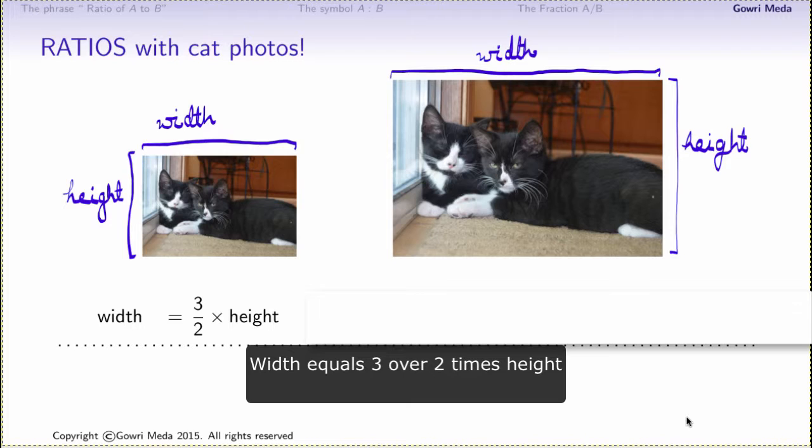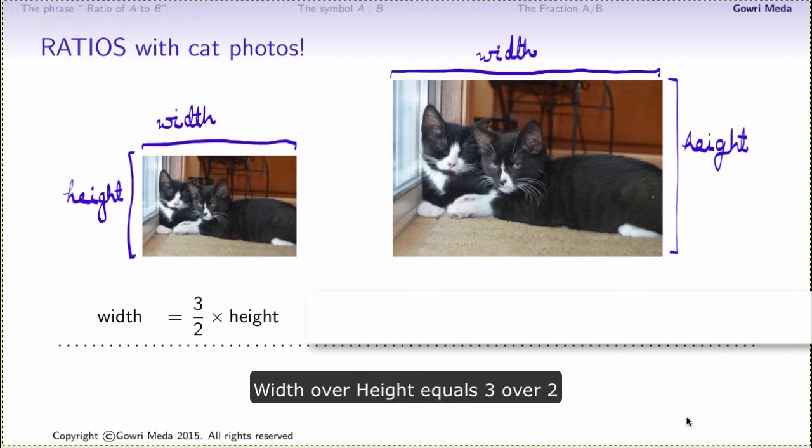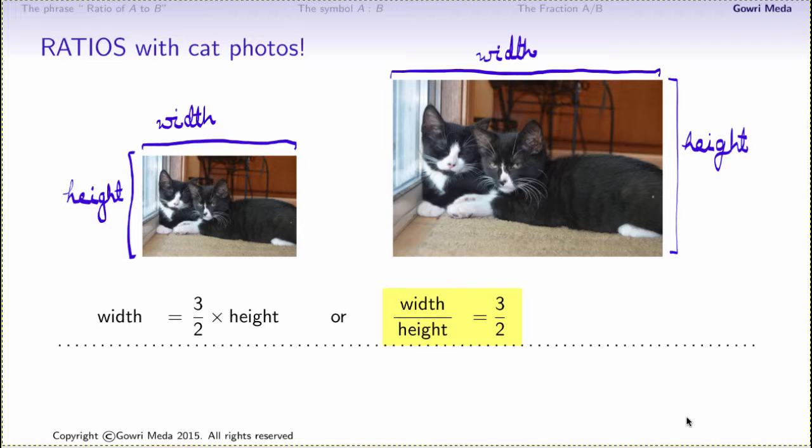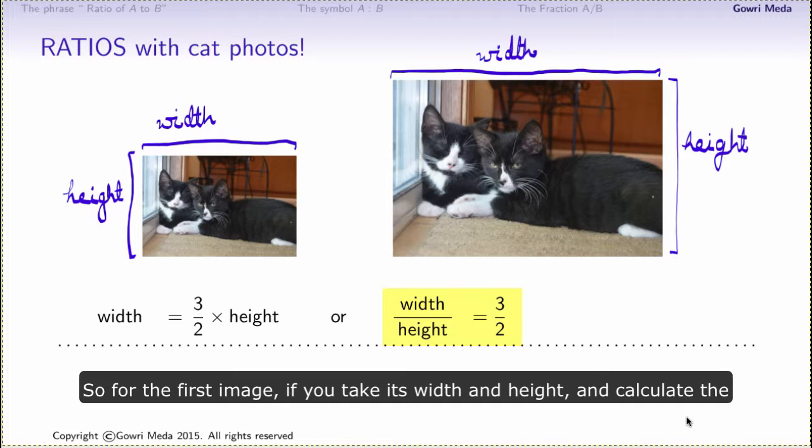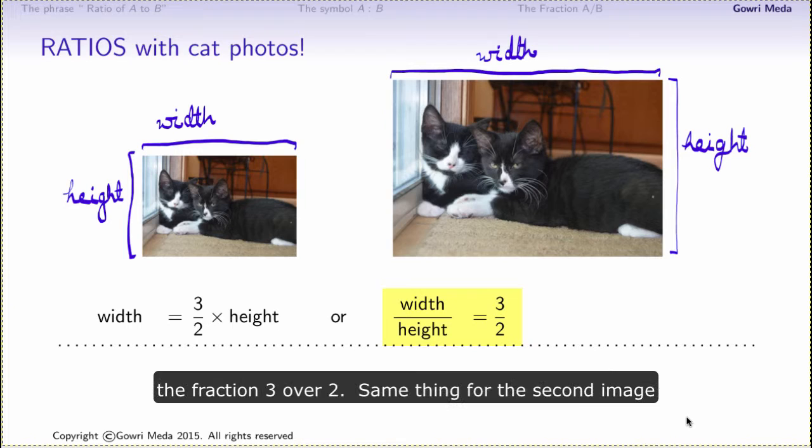Let's write that out as a math equation: width equals 3 over 2 times height. We may also rewrite the above equation as width over height equals 3 over 2. So for the first image, if you take its width and height and calculate the fraction width over height, it will be exactly equal to the fraction 3 over 2.